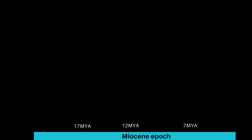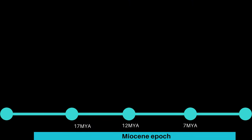There are three known species of Shivapithecus. Shivapithecus indicus is the oldest species, living between 12.7 and 11.4 million years ago. It was the smallest and least specialized of the three species.